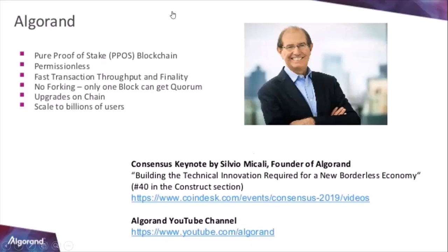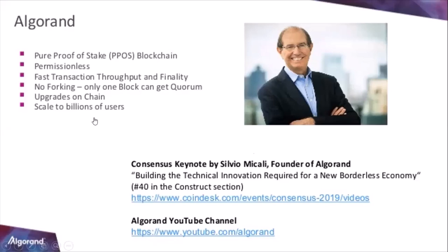The genius you are seeing here is the founder of Algorand — the brain behind Algorand. He is a professor at MIT and has more than 35 years of experience in the tech world. He is a Turing Award winner, which is the highest award you can receive in the computing field.